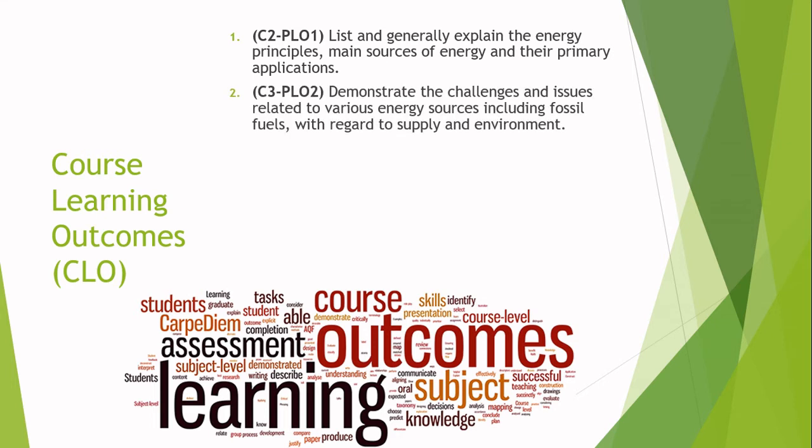The second course learning outcome is C3 — cognitive level 3 in Bloom's taxonomy — which stands for application and is in the higher-order domain. In this outcome, you will be able to demonstrate the challenges that the world faces during various energy source uses, including fossil fuels and other sources like fuel cells, which have economical challenges.